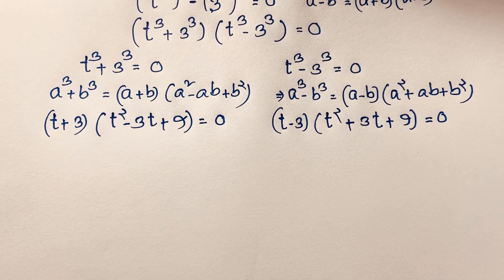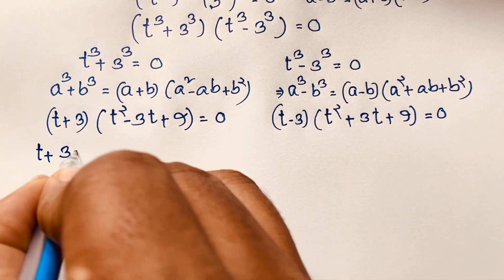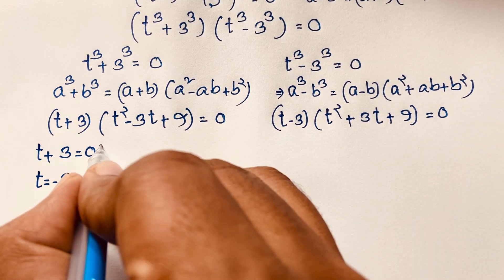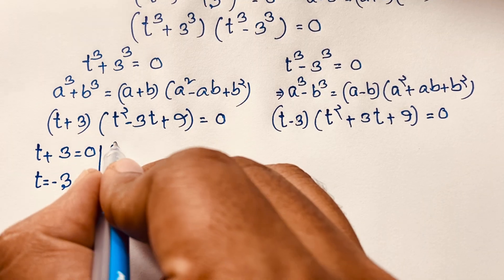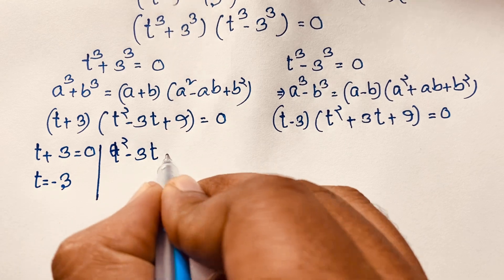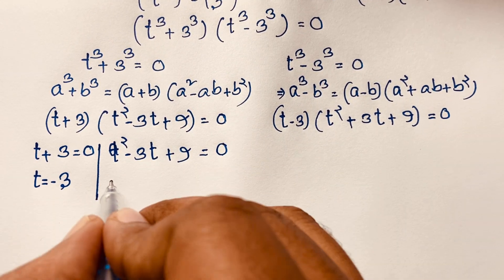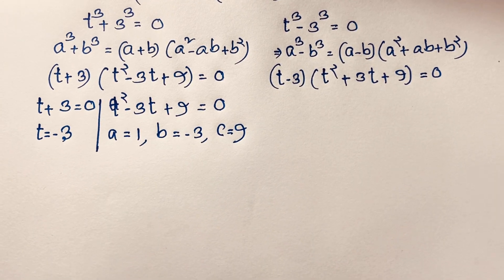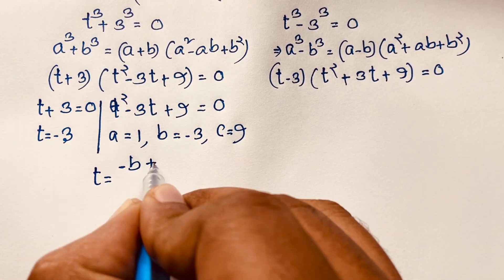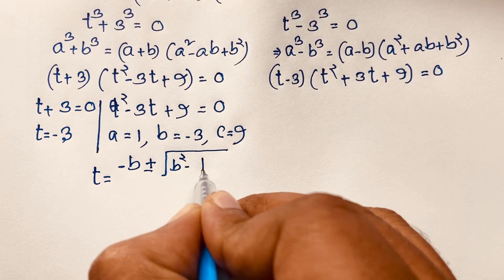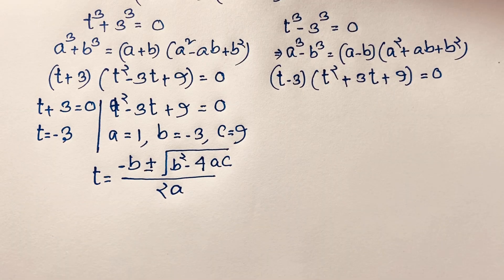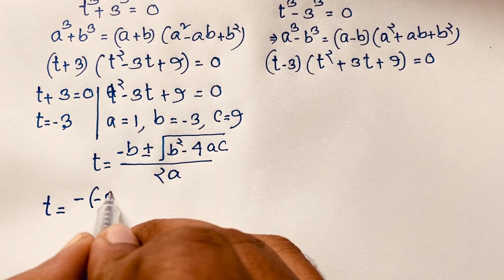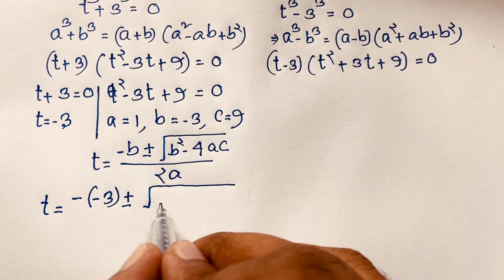We now find four cases. First case: t + 3 = 0, so t = −3. That is one real solution. For the second case, t² − 3t + 9 = 0, which is a quadratic equation where a = 1, b = −3, and c = 9. I apply the quadratic formula: t = (−b ± √(b² − 4ac)) / 2a.